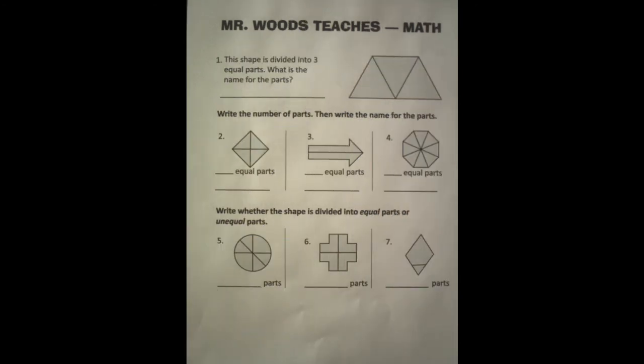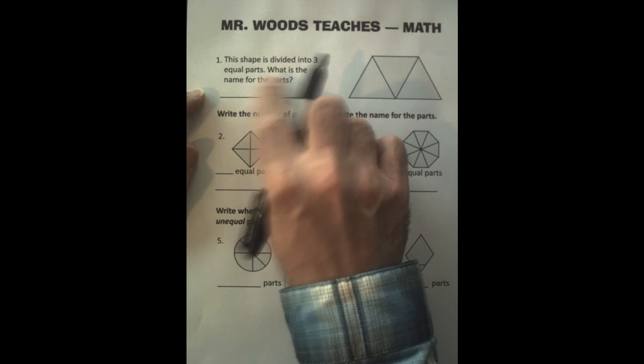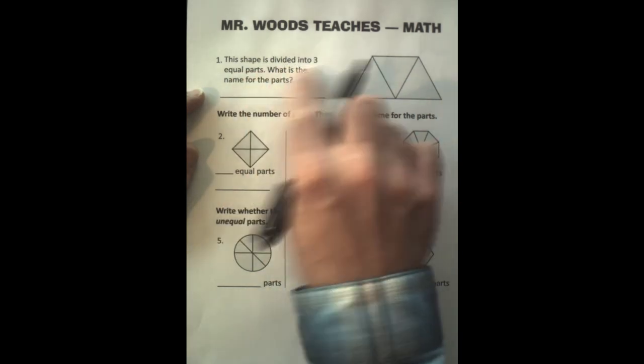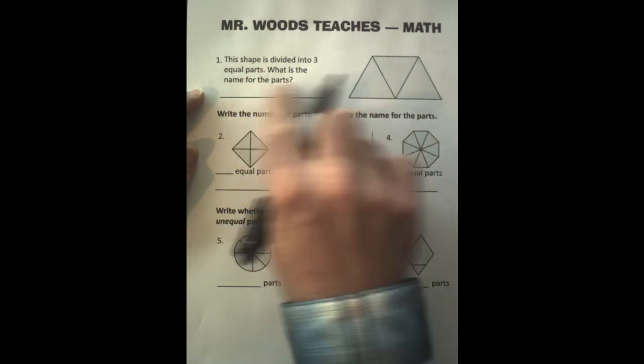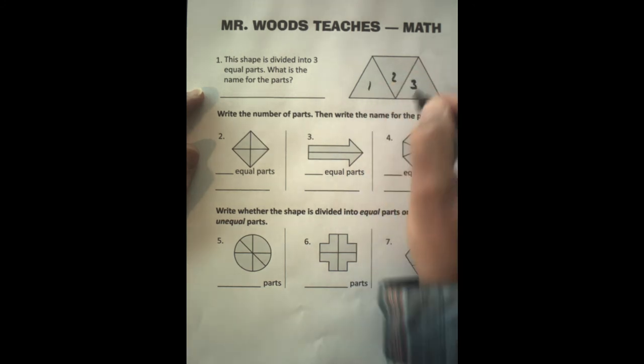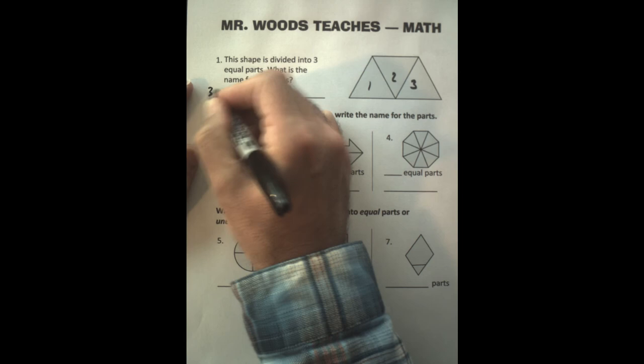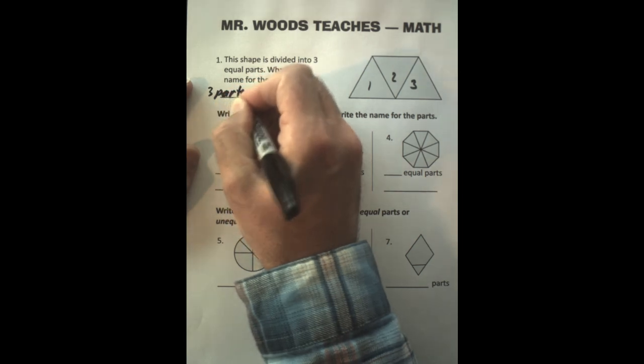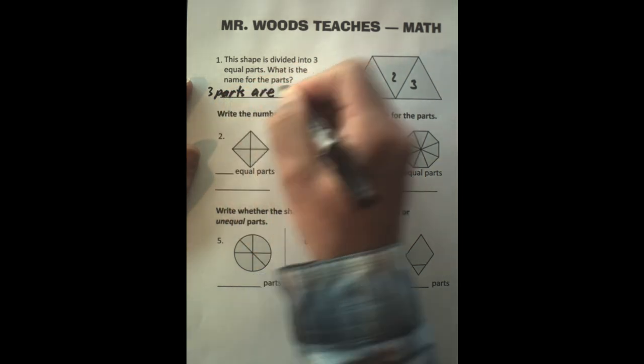Now let's practice what we've learned. Let's take a look here at number one. It says this shape is divided into three equal parts. What is the name for the parts? So remember it's one, two, three. So three parts are thirds.